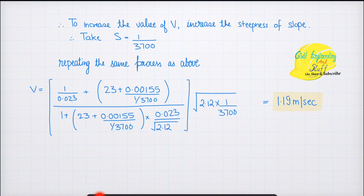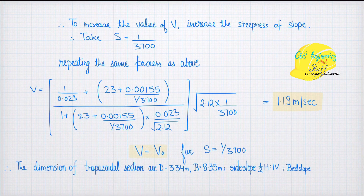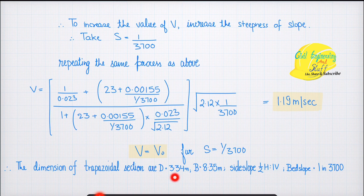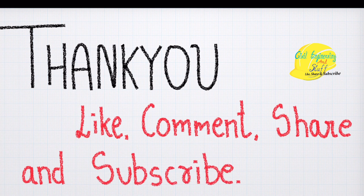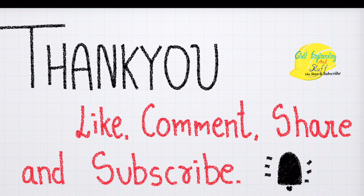With the new bed slope of 1/3700, the actual velocity equals the critical velocity of 1.19 m/s — the regime condition is satisfied. The final design dimensions of the trapezoidal channel section using Kennedy's method are: depth = 3.34 m, width = 8.35 m, side slope = 0.5H:1V, and bed slope = 1/3700. This completes the design of the irrigation channel. Thank you for watching — like, comment, share, and subscribe for more videos.